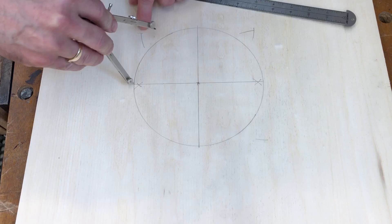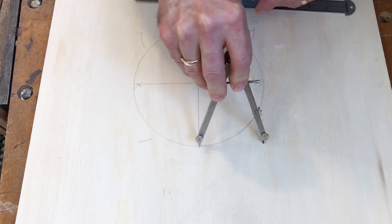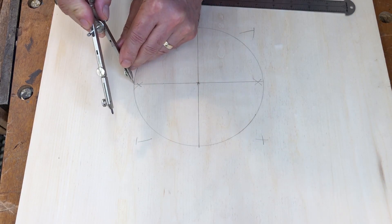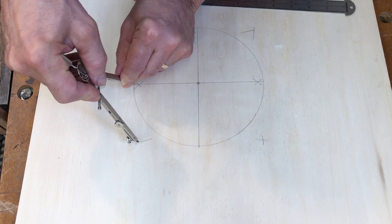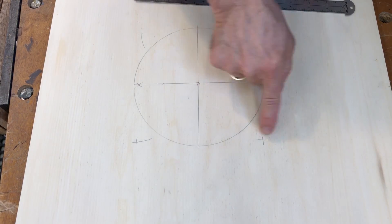You'll see I'm ending up with an intersection. And we missed that one just a little bit, so we'll extend that line. So there are my four intersecting points.